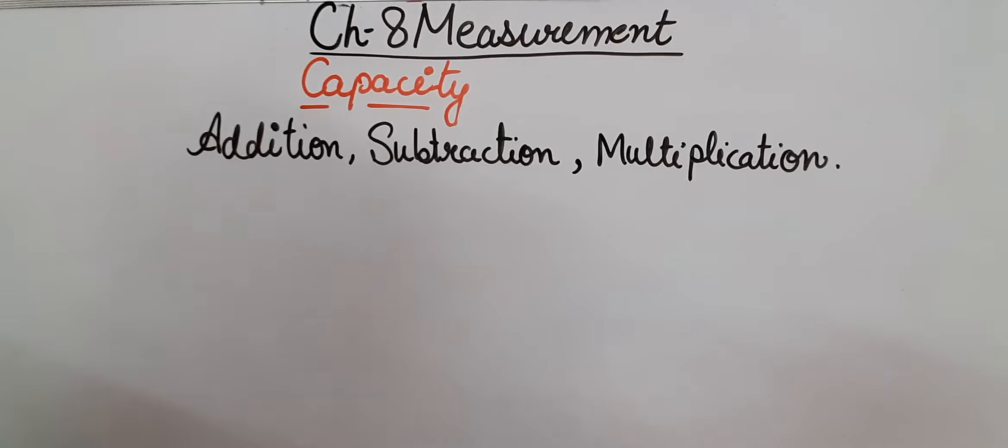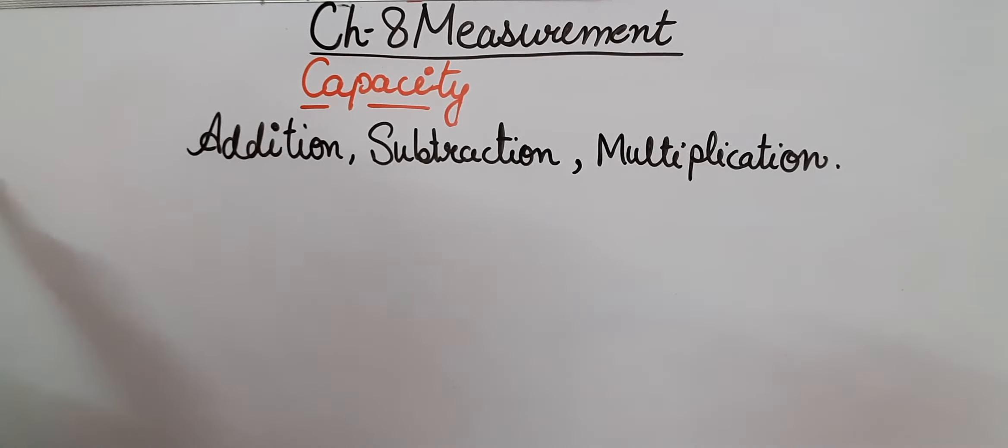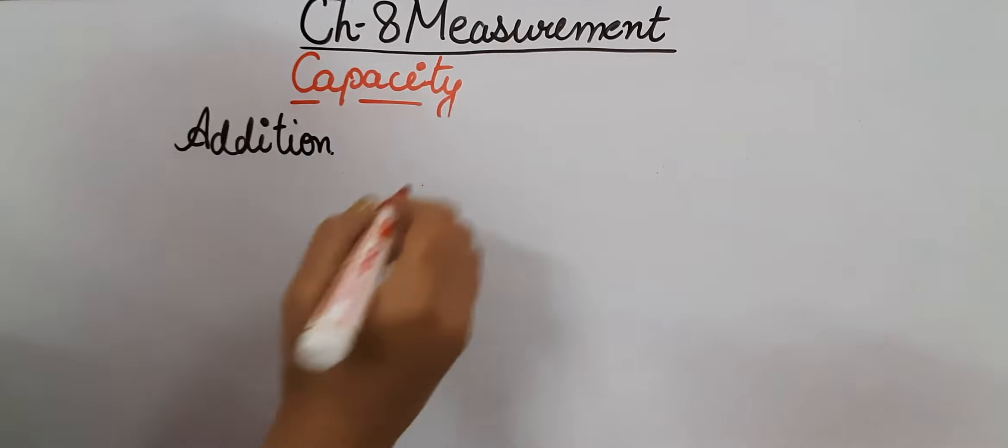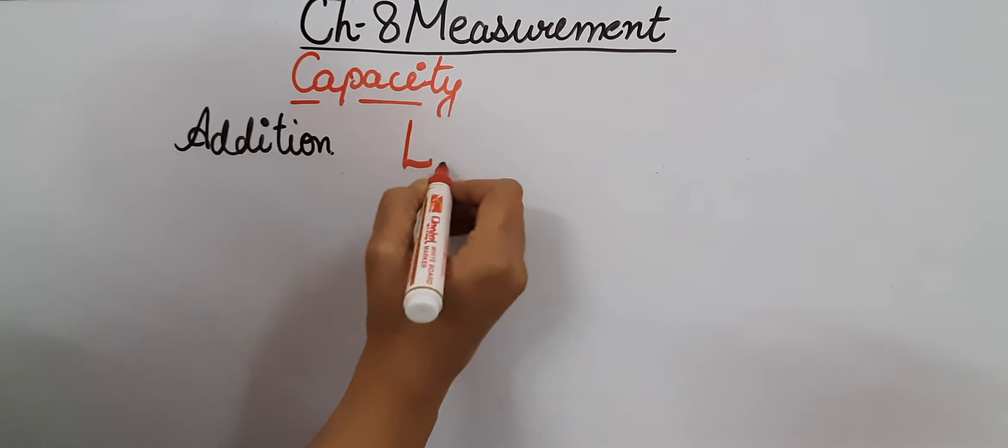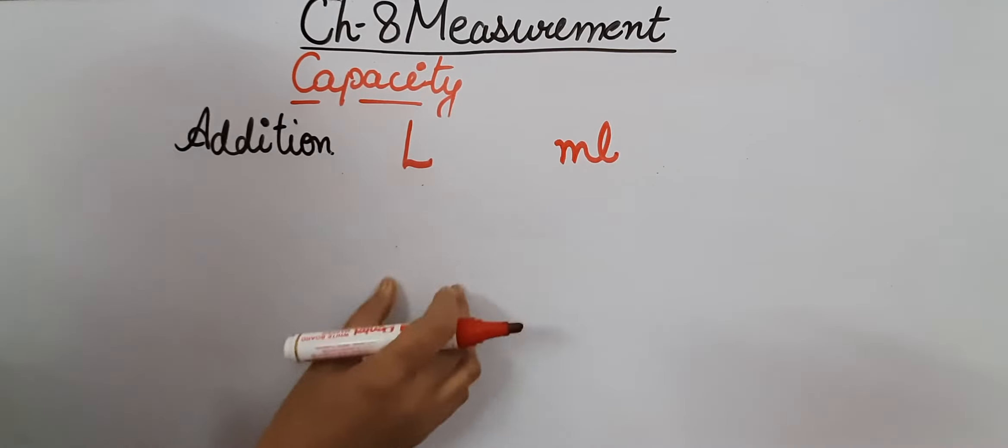Now let us understand addition, subtraction, and multiplication of the units of capacity. This will also be done as we have done in weight as well as in length. So let's see the addition first. We will write the digits given according to the units. This is the liter section and this is the milliliter section.